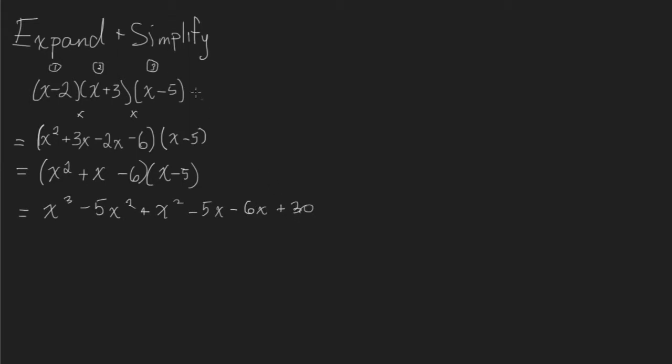This is the expansion. This is the complicated part. We went from a fairly simple statement, nicely grouped with brackets, to a much more complicated polynomial. And the reason why it's not considered simple is because we have like terms. We've got 2 x squareds here, and we've got an x and an x here.